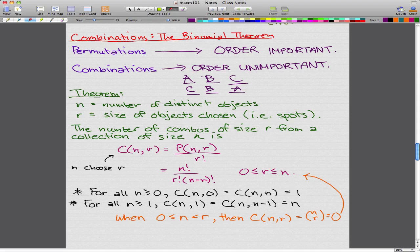Now, here's the theorem for combinations. We have N being the number of distinct objects and R being the size of the objects chosen, or for example, spots. So let's say that we are working with letters. There are 26 letters, and here we are only choosing 3 spots. So R is 3 and N, in the case of having letters, is 26.